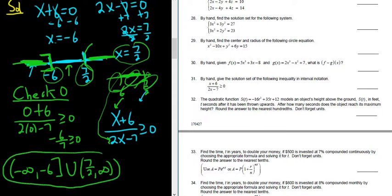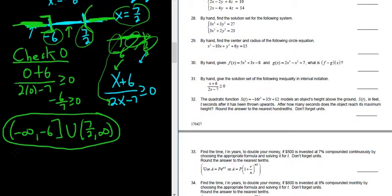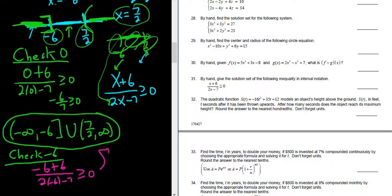If you're not convinced about the bracket and parentheses stuff, you could do it another way. You could just plug it in. Check this out. So check negative 6. You could just actually take the number and plug it in. So negative 6 plus 6 over 2 times negative 6 minus 7. We want to see if that's greater than or equal to 0. That gives us 0 over negative 12 minus 7 is negative 19. And we want to see if that's greater than or equal to 0. So 0 greater than or equal to 0.